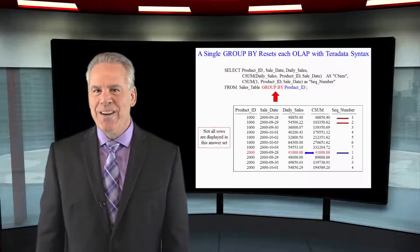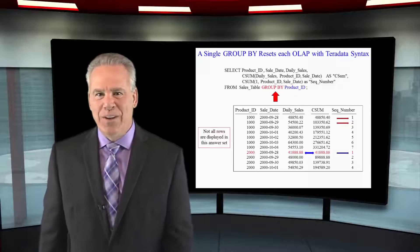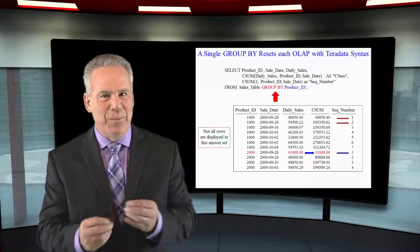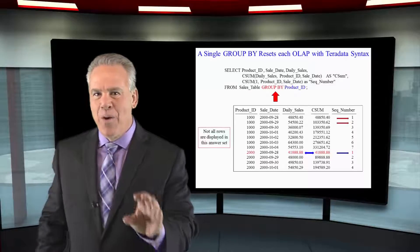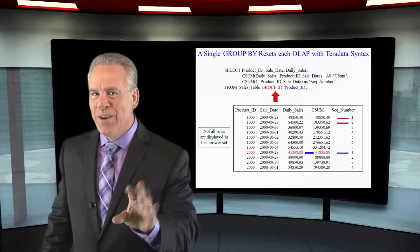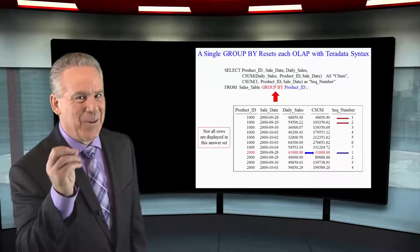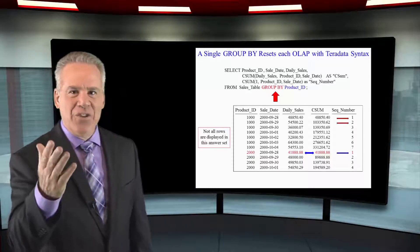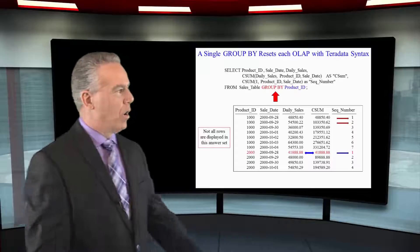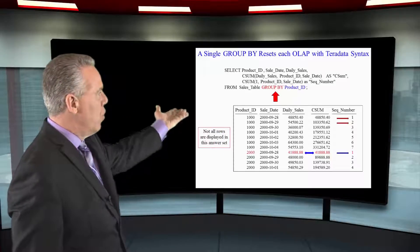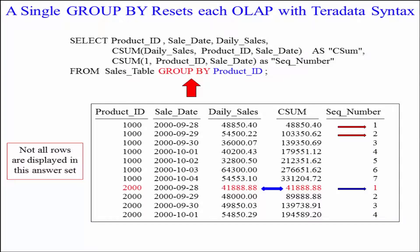This is your next opportunity to really understand the GROUP BY statement — why it's good and then why it's not so good. As you can see here, we've got our two ordered analytics on our CSUM and our sequential number, and then at the end we say GROUP BY Product ID.